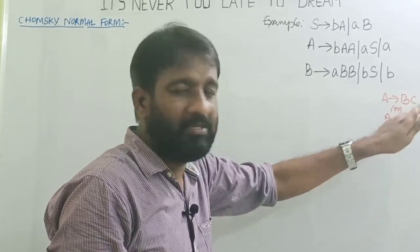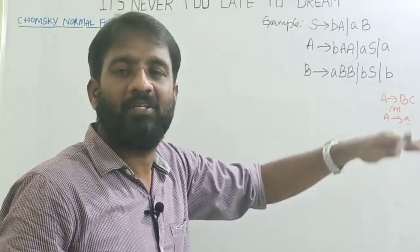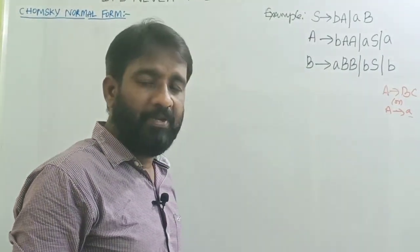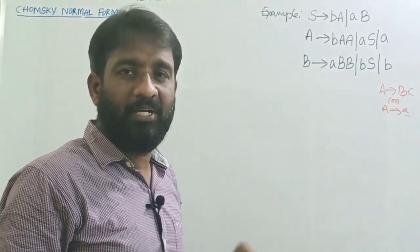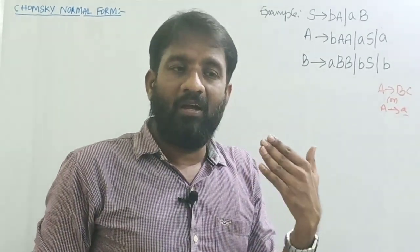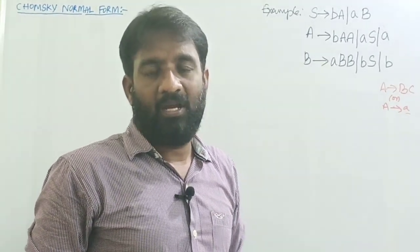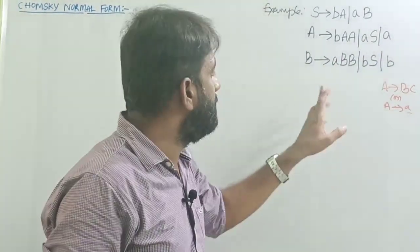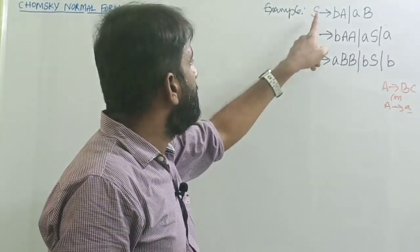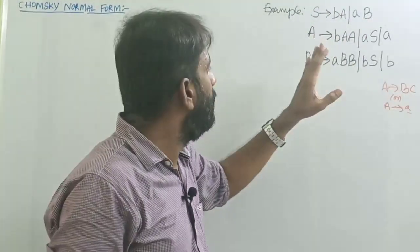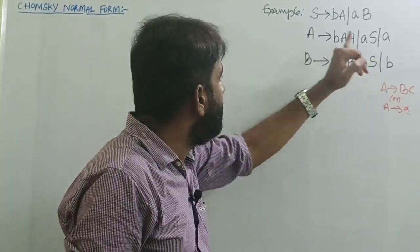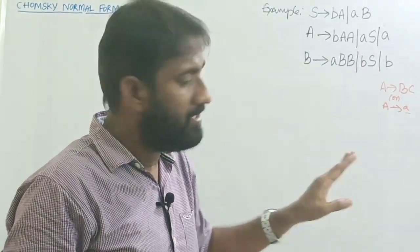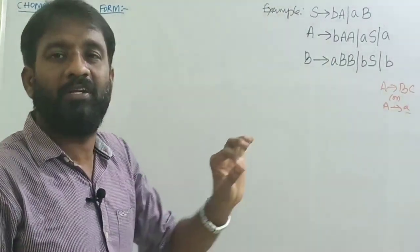Now observe this grammar. The first step is to eliminate useless variables, epsilon productions, and unit productions — simplify the grammar. There are no epsilon productions and no unit productions. Also, S derives A and B, so all variables are useful. There are no useless variables, meaning the given grammar is already in simplified form.